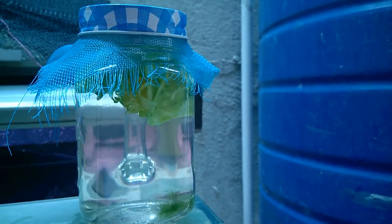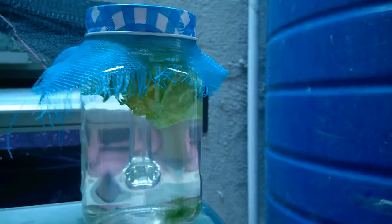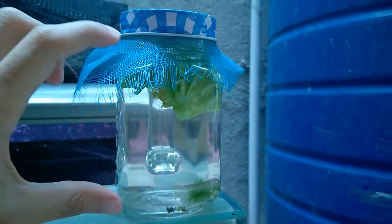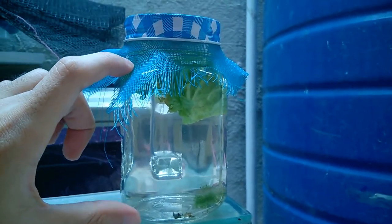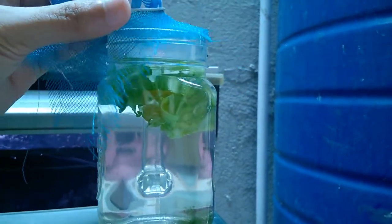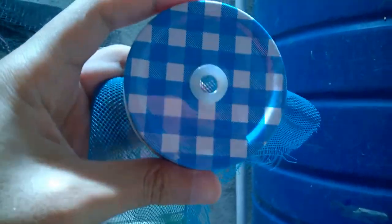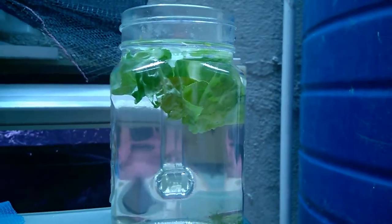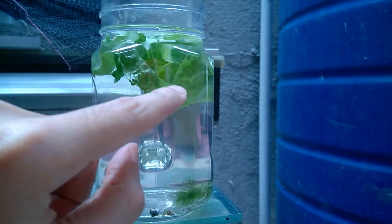This is how I set up my infusoria culture. I have a glass jar and in here I just cover it with mesh because mine has a hole above to help aerate the water, and just add a lettuce.